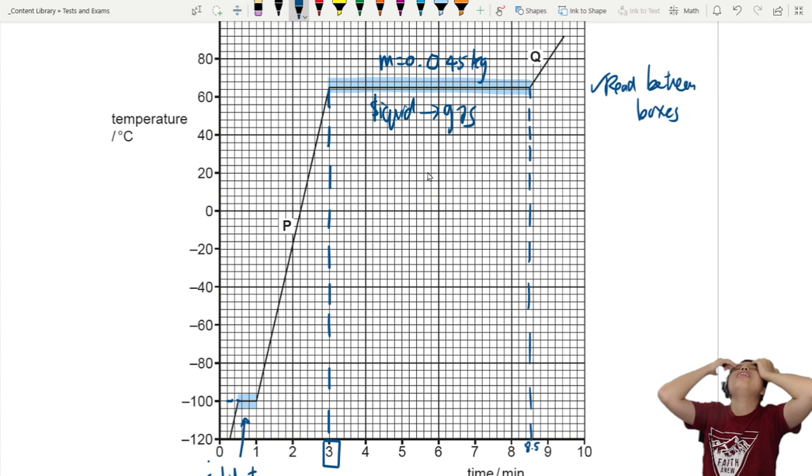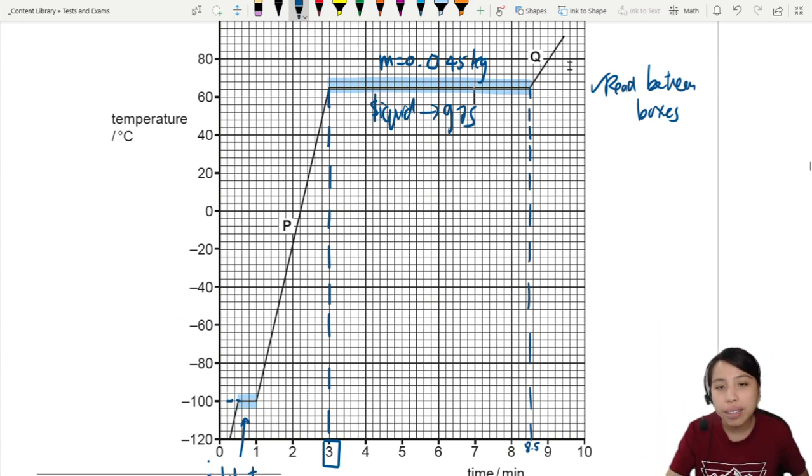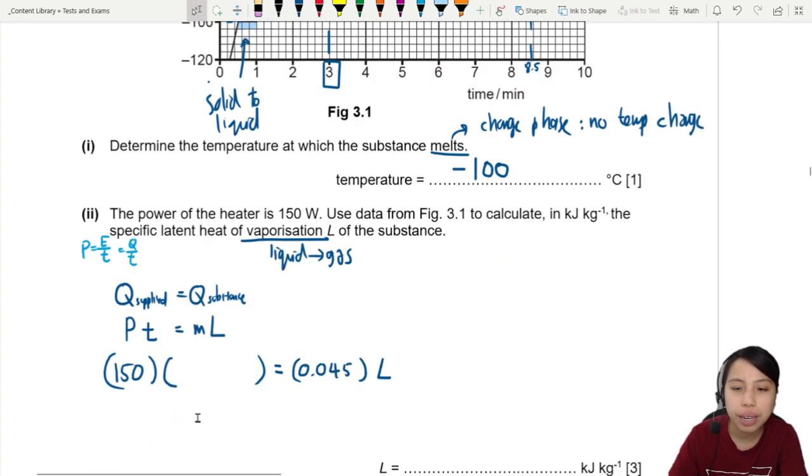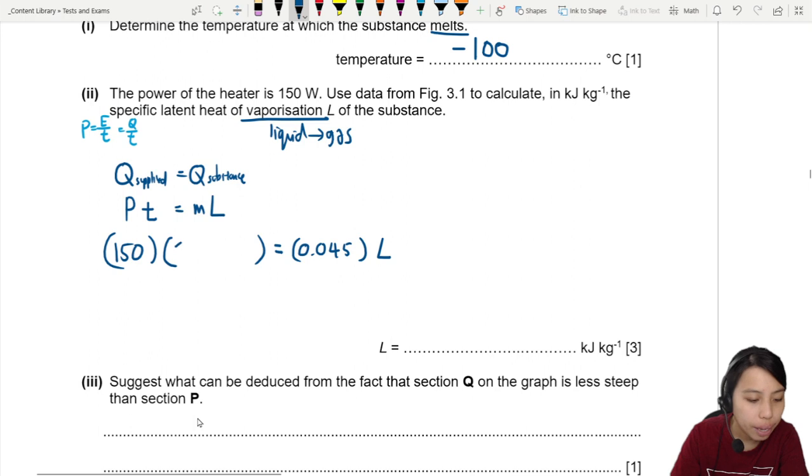Once it's all gas, then you'll continue to increase temperature. So let's use these two times. 8.5 down here and then 3. This is our time interval. So we take 8.5 minus 3.0.